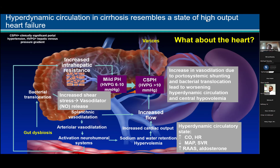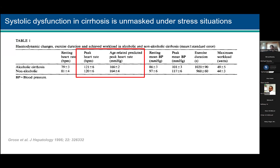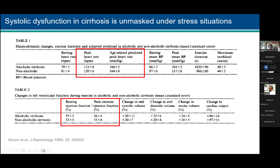So what does the heart do in this setting? Studies looking at the heart in patients with alcoholic and non-alcoholic cirrhosis show that while at baseline the heart rate is fine, with exercise they increase the heart rate — but not as much as an age-related heart rate. Once you stress them with exercise, their heart does not respond as a normal individual would. Looking at Child class, Child A had an increase in cardiac output of 121%, which was pretty good, but Child B and C patients had a lower response. The sicker the patient, the less the heart responds to exercise.